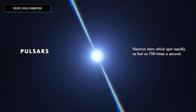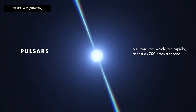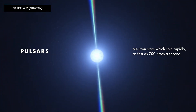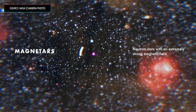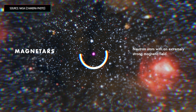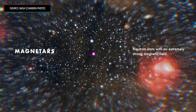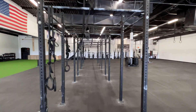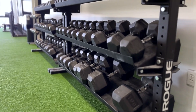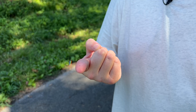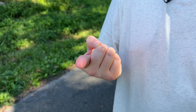Neutron stars are wild — and that's not even to mention some of their more exciting flavors, like pulsars, which can spin up to 700 times a second, or magnetars, which have magnetic fields so powerful they can literally rip atoms apart. Neutron stars are all about the extremes. So the next time you're in a gym, whatever you're lifting, just be thankful it's not a neutron star the size of a grain of sand.